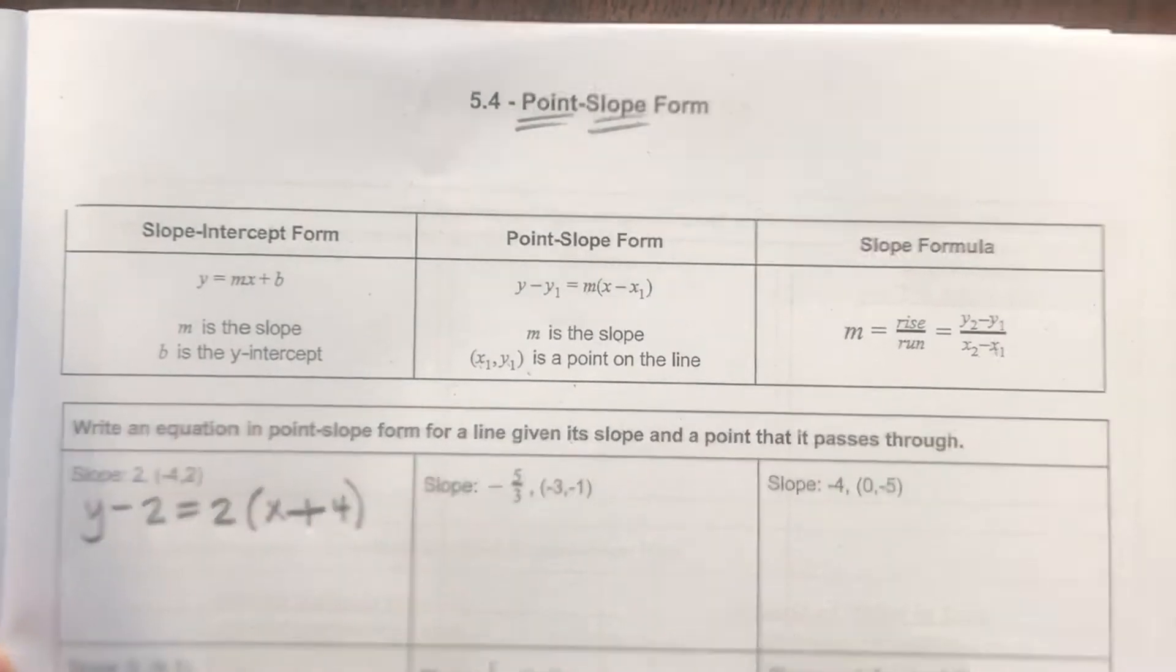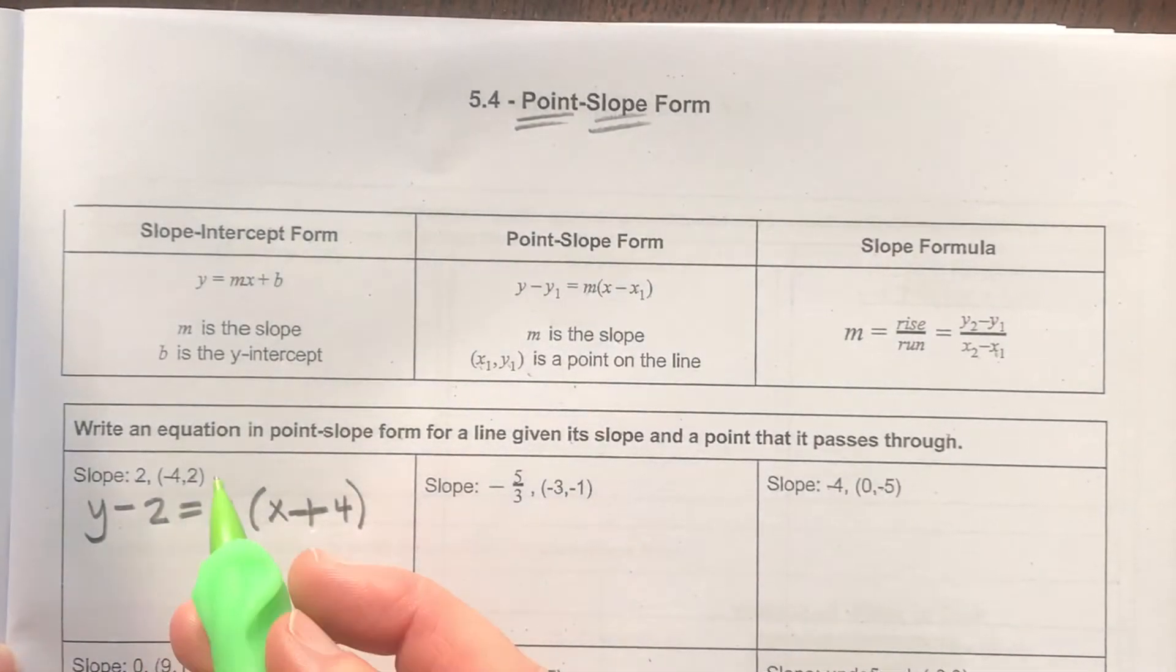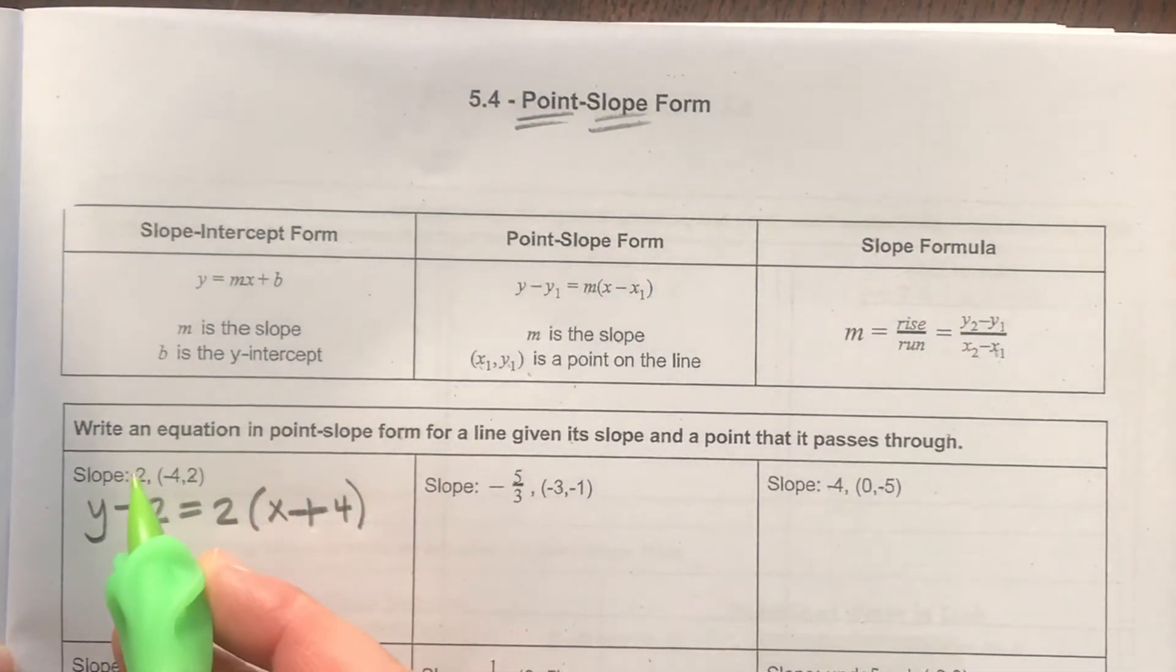Now, this is our point-slope formula for this point, negative 4, 2, and our slope m. And that's it. That's the point-slope form.